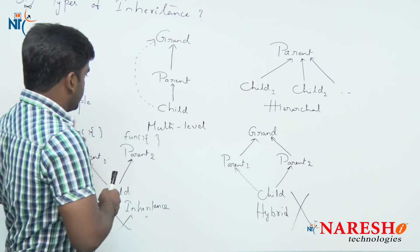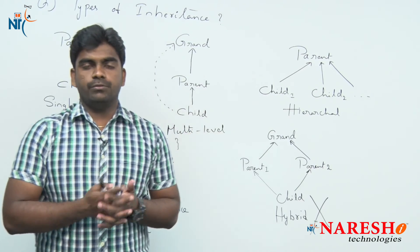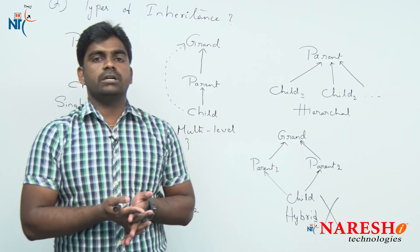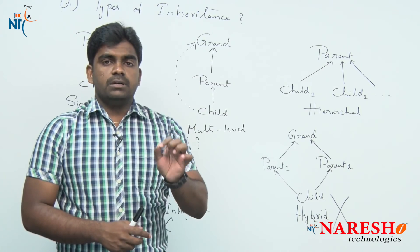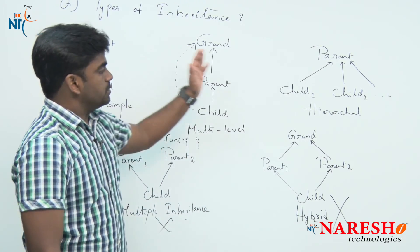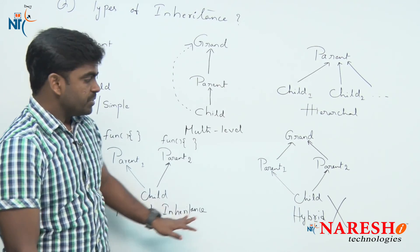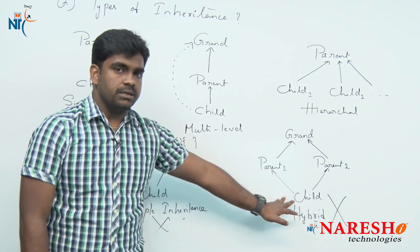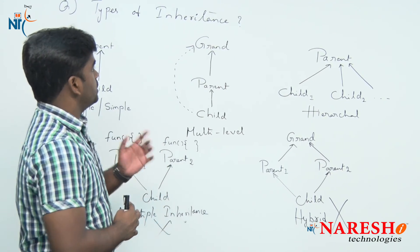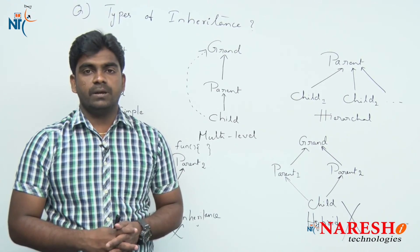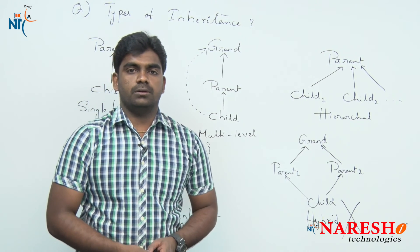So, these are the types of inheritances available in object oriented programming. Object oriented programming concepts are common for all languages, but Java supports only the first three inheritance concepts: single, multi-level, and hierarchical. Multiple inheritance and hybrid inheritance Java does not support. Hope you understood the types of inheritance. For more videos please subscribe to the Nourish IT channel. Thank you.